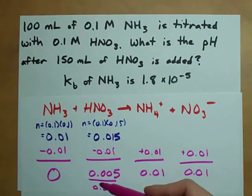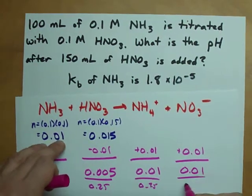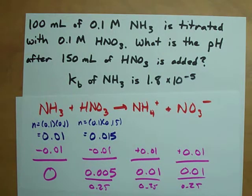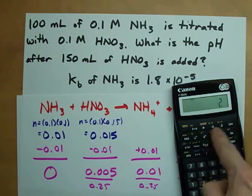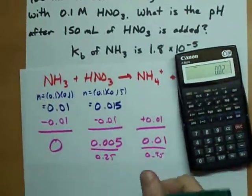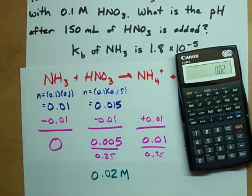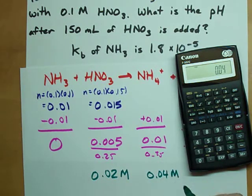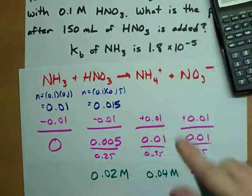The total volume is 250 milliliters. So I'm going to do that for all these. 0.005 moles divided by 0.25 liters gives me 0.02 moles per liter of nitric acid, 0.04 moles per liter of NH4+, and 0.04 moles per liter of nitrate ions.